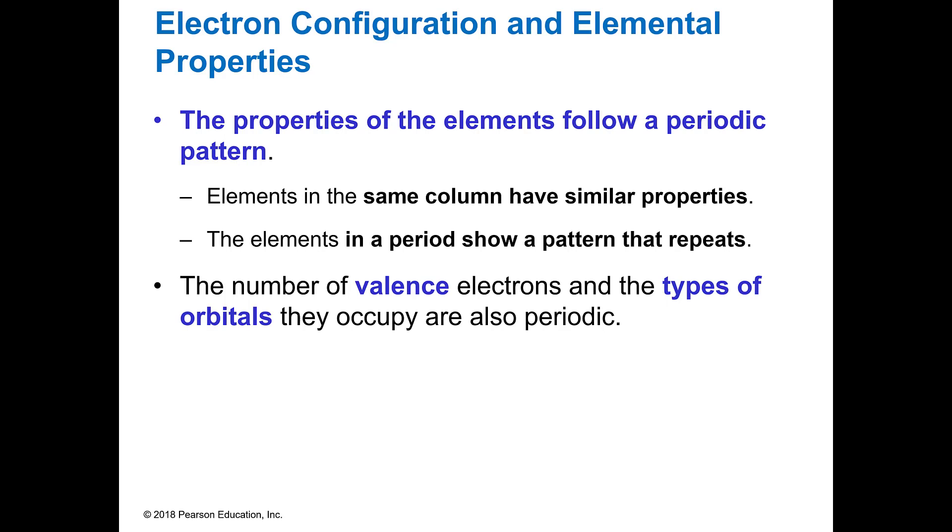The properties of the elements follow this periodic pattern, and so elements in the same column have similar properties. Elements in a period show a pattern that repeats. That column is what we call groups or some people call them families. The number of valence electrons and the types of orbitals they occupy are also periodic. So if you're in 1A then you are all going to have an s1 configuration and one valence electron.